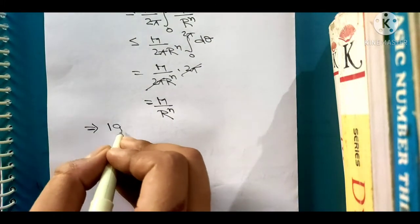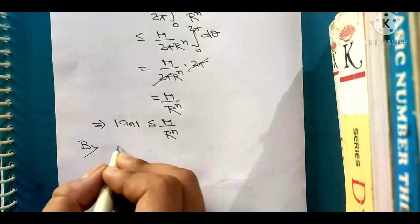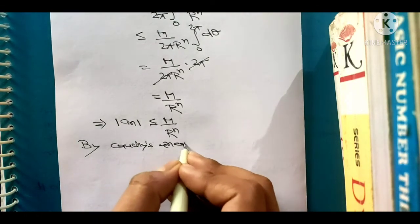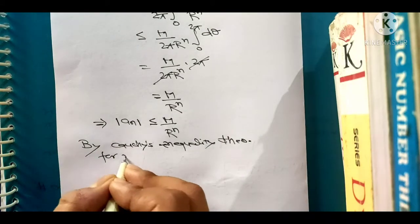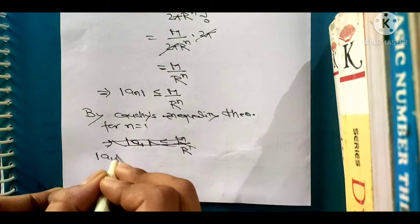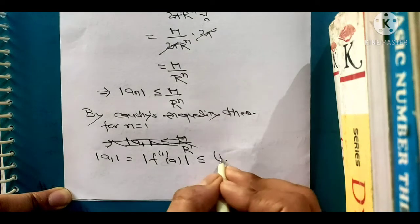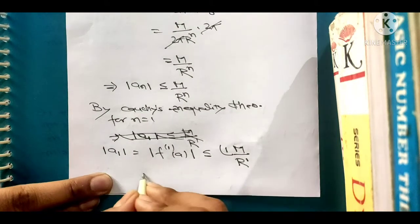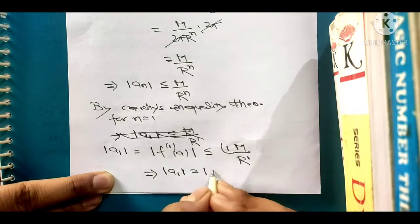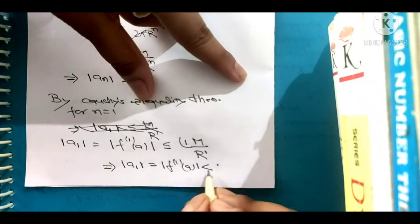So what we get is modulus of a_n is less than or equal to M upon R^n. By Cauchy's inequality theorem, for n equals 1 what we get is modulus of a_1 equals modulus of f'(a) less than or equal to factorial 1 times M upon R to the power 1. You may check my description box for the proof of Cauchy's inequality. This will become modulus of a_1 equals modulus of f'(a) less than or equal to M by R.